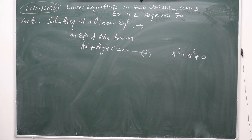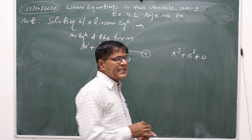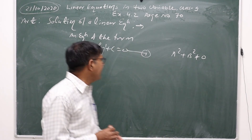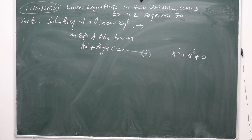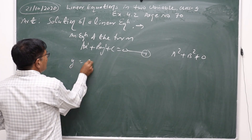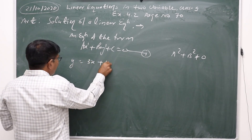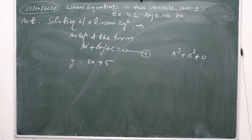Now, when a linear equation is given, the solution of the linear equation means the set of values of x and y which satisfy the given linear equation. For example, if we are given an equation, let us suppose the equation is y equals 3x plus 5. Then how many solutions does this equation have?